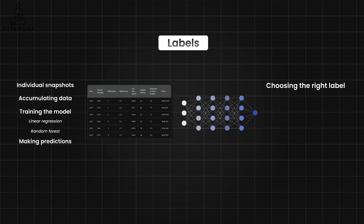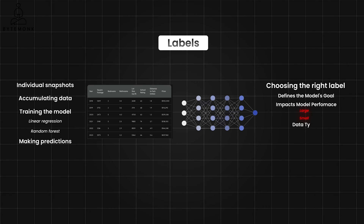In the housing price example, we choose price as the label, which is ideal for this scenario. The label determines what the model is ultimately trying to learn and predict — in our case, we want to predict the selling price of a house. Choosing square footage wouldn't make sense as the model wouldn't be able to estimate the entire house value based solely on size. A well-chosen label leads to a model that aligns with our goals. If we use a label like 'large' or 'small' to describe house size instead of square footage, the model predictions would likely be inaccurate. The label should be compatible with the type of prediction you want to make — in our case, price is a numerical value, which aligns with our goal of predicting a continuous value.